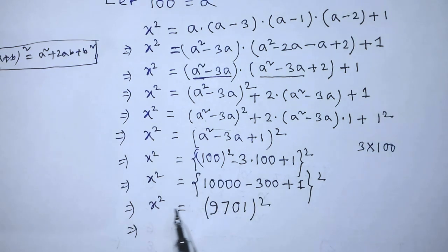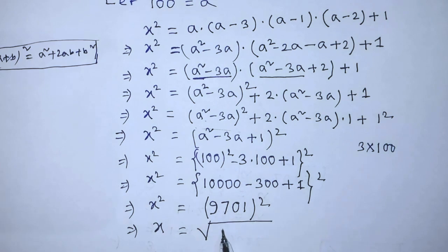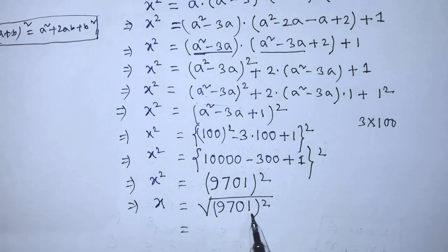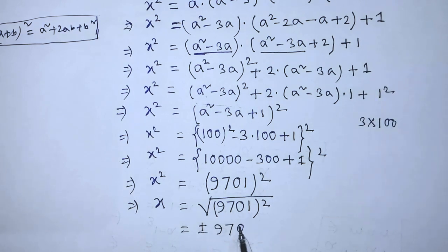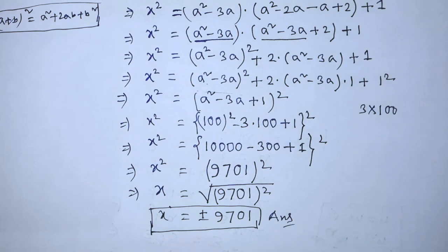To find x, we transpose the power 2 from the right hand side, taking the square root of 9701 squared, giving x = ±9701. This is our final answer. If you like this video and this trick, please support me and subscribe to my channel. Thank you, bye bye.